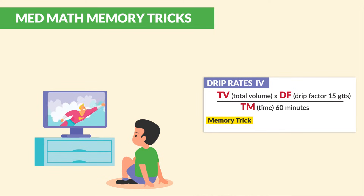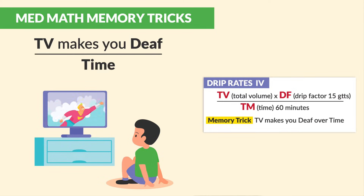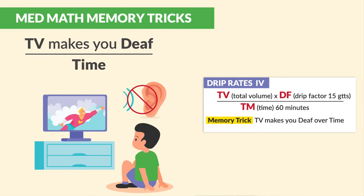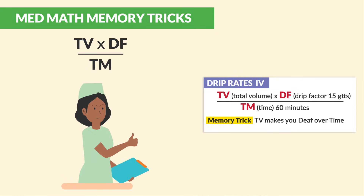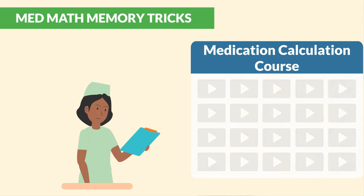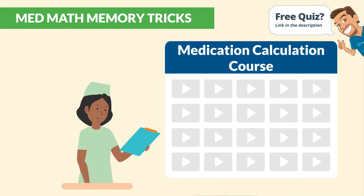The memory trick we use is: TV makes you deaf over time. So on your next medication calculation exam, write out this formula — TV makes you deaf over time — and you're going to get every single question correct every time. For specific examples, we break this down in our medication calculation course, so please go there to see those examples.